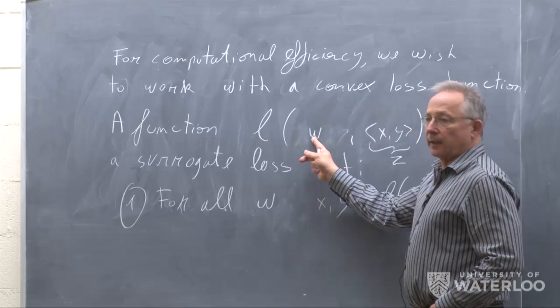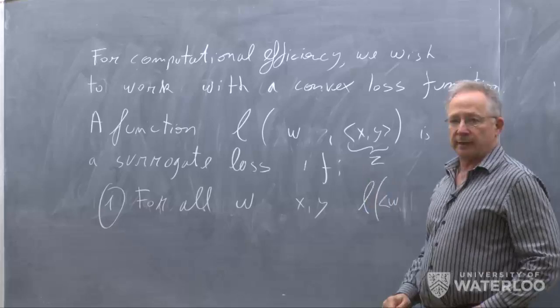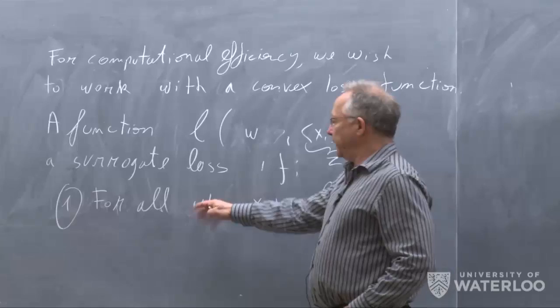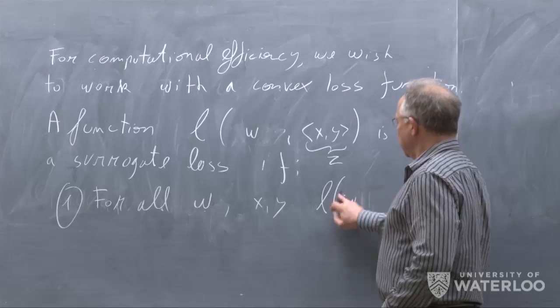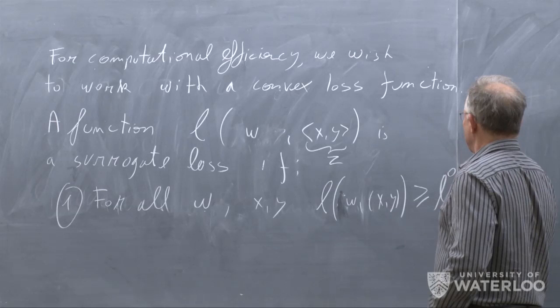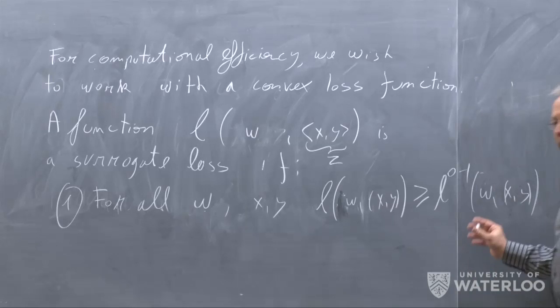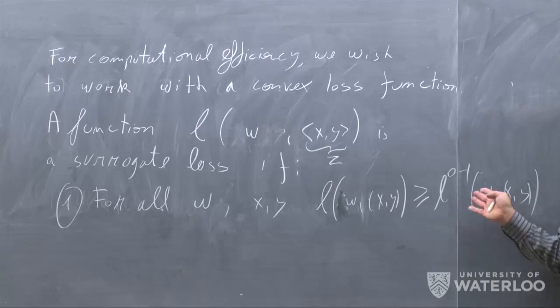We have a half space parameterized by a vector W. I want to know what is the loss of this half space on a point X with label Y. We require that for every hypothesis W and for every point X, Y, the loss of W on the point X, Y is an upper bound on the 0-1 loss of W on X, Y. The 0-1 loss is what we want to minimize — we want to make as few errors as possible. We want a function such that if we get a low error with respect to this function, we are guaranteed a low error with respect to what we care about, which is just counting the number of misclassifications.